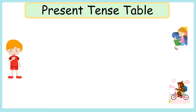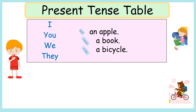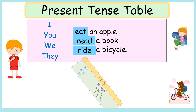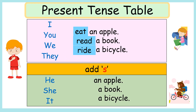Do you remember this present tense table? We use the base form of the verbs after I, you, we, they. And we need to add S for the base forms of the verbs after he, she, it.